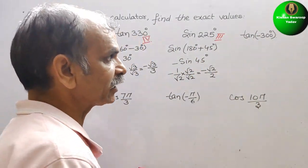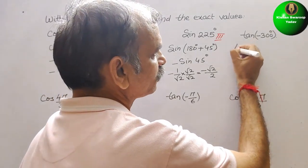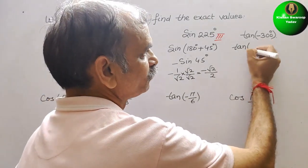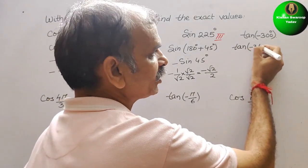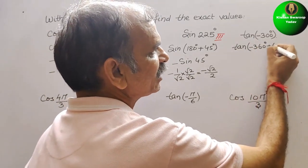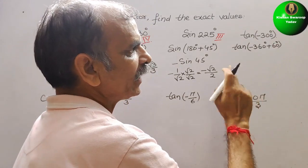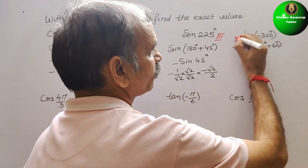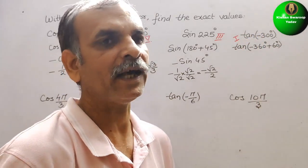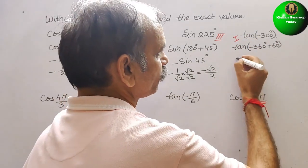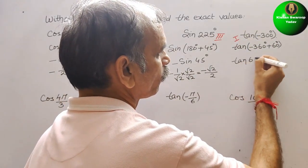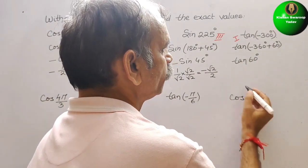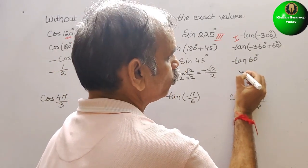tan(−300°) — going in the clockwise direction, it comes into the first quadrant. It will be like tan(−300°), and it lies in the first quadrant. Tan is positive in the first quadrant. Therefore, we will get tan 60°. We know the value of tan 60° is √3. So the answer is √3.